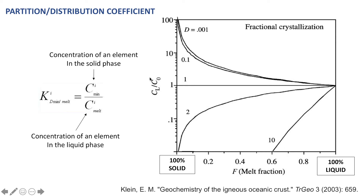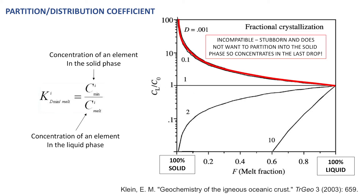Up the y-axis we have concentration in the liquid over concentration in the solid. An incompatible element is an element that has a partition coefficient below 1 — for example 0.001 or 0.1. These elements are stubborn and do not want to partition into the solid when it is present, so they become concentrated in the very last drop of liquid remaining.